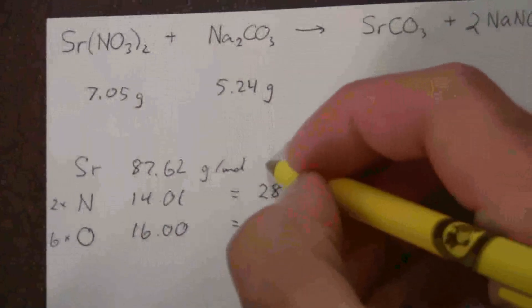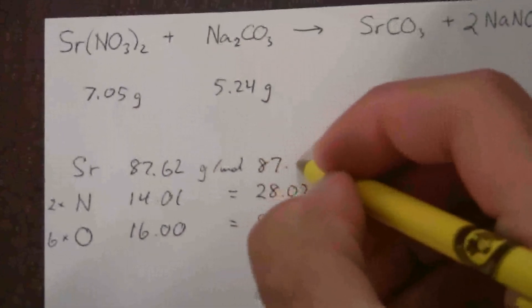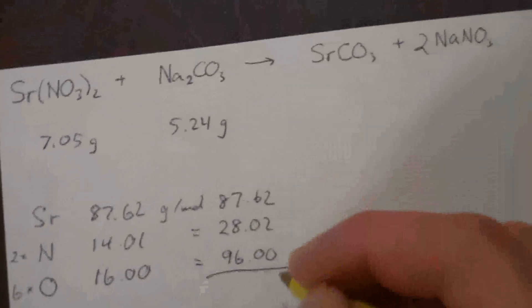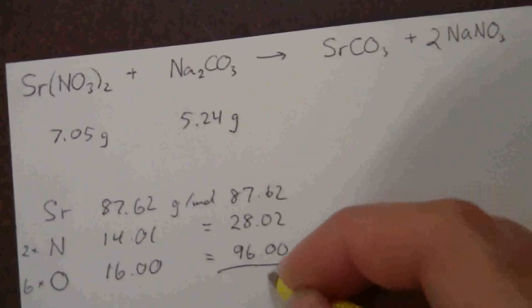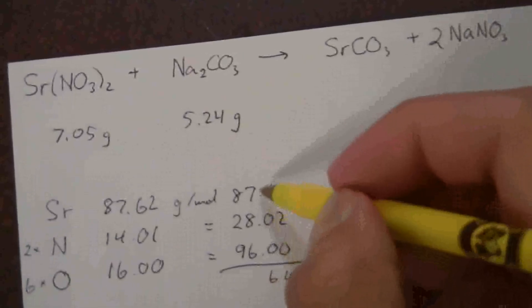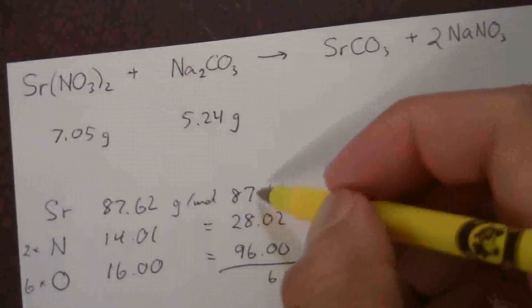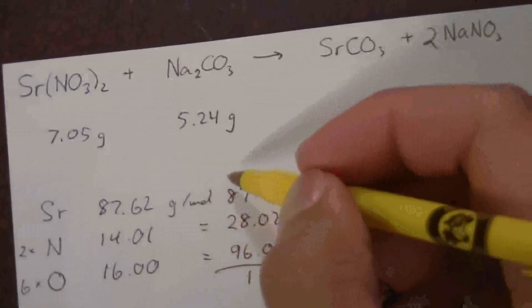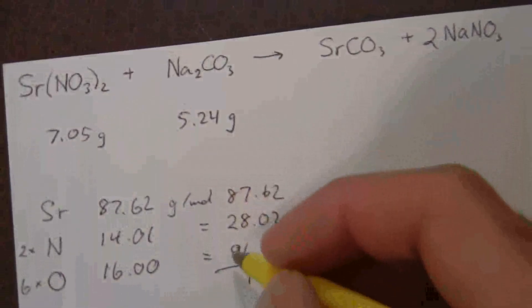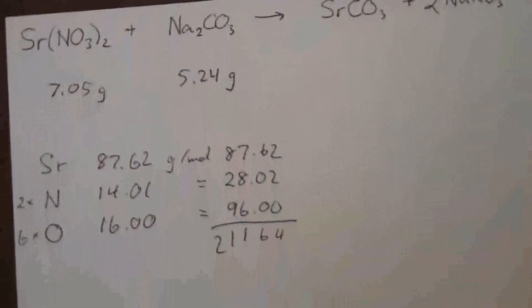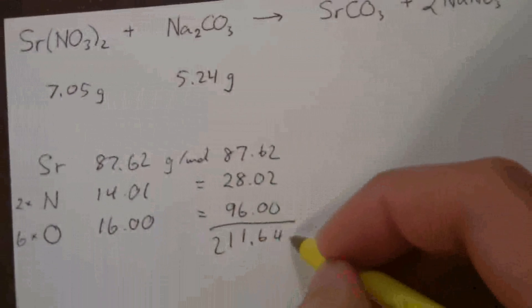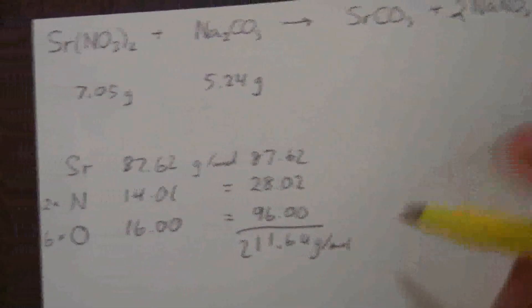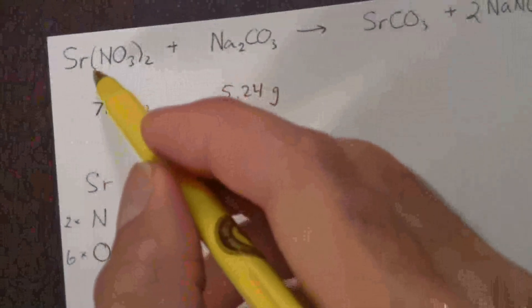My two nitrogen, this will give me 28.02. And the six oxygen will give me 96.00. And I add that in with my 87.62. And when I add these up, I get, let's see what we have here. Seven and eight is 15 and six is 21. And that makes 10 and 21 there. So I have 211.64 grams per mole. That's for the strontium nitrate.